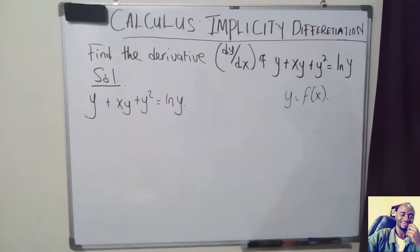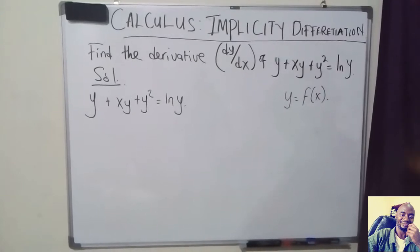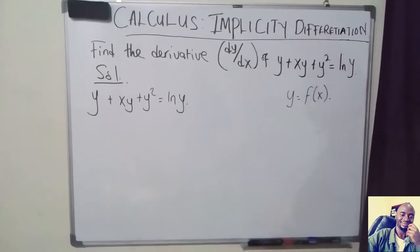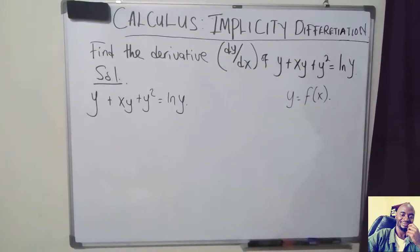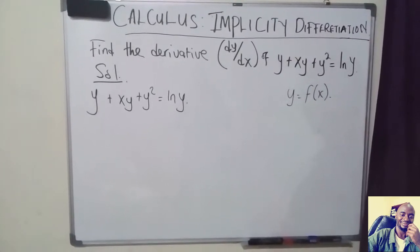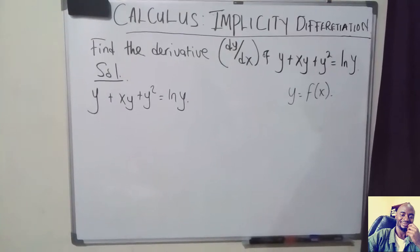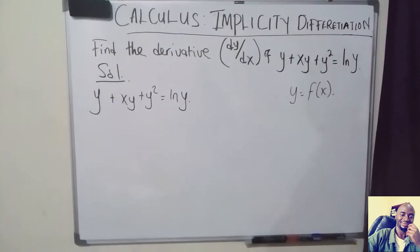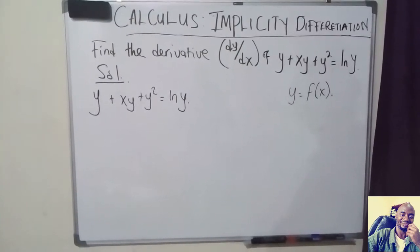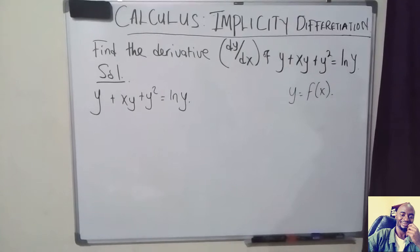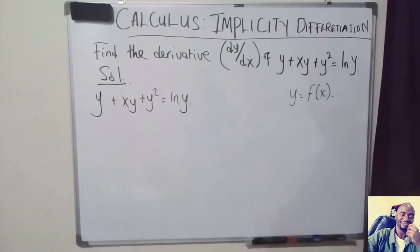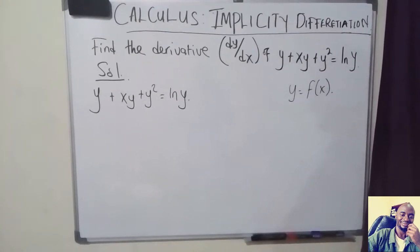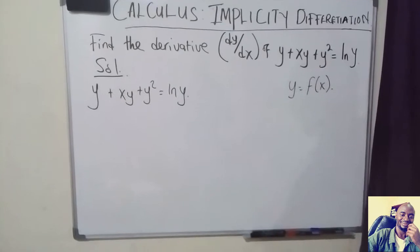So in such a scenario, what you have to use is what you call implicit differentiation. Implicit differentiation comes from a function of a function rule, but I'm not going to go into detail for that — I'll just show you the simple way of doing it.